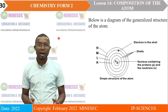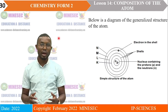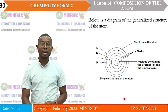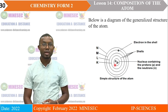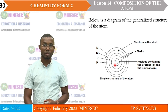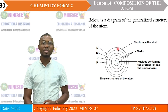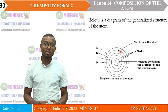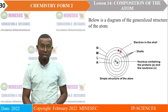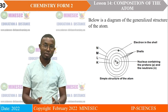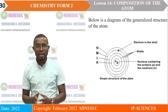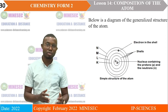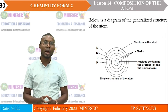Below is a diagram of the generalized structure of the atom. We have a very small, tiny and massive part called the nucleus, which contains the protons and neutrons. We also have imaginary circular lines around the nucleus which contain the electrons. To conclude: an atom is made up of the nucleus and the shells. In the nucleus we have protons and neutrons, and on the shells we have electrons.